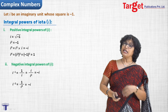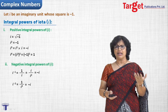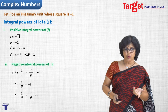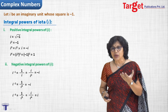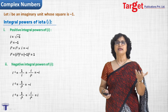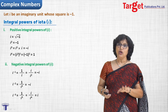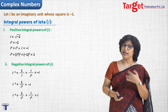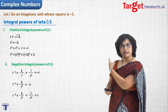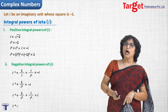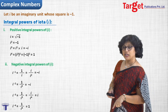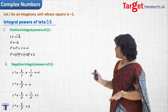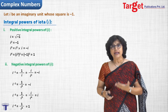Next, i to the minus 2 is 1 upon i squared, which is simply minus 1. For i to the minus 3, which is 1 upon i cubed, we can either expand i cubed as i squared times i and replace i squared by minus 1, or multiply and divide by i to get i upon i to the 4th. Since i to the 4th is plus 1, the answer is plus i. And i to the minus 4 is 1 upon i to the 4th, which equals 1. The rest of the negative integral powers you may try on your own.